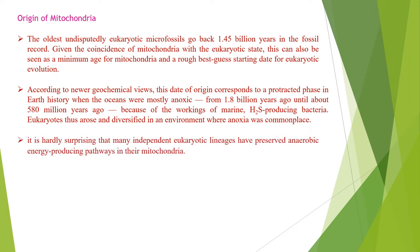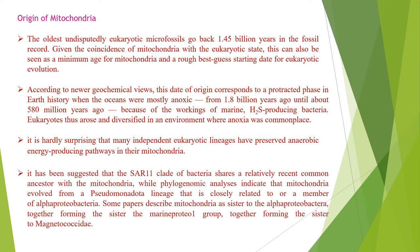It is surprising that many independent eukaryotic lineages have preserved anaerobic energy-producing pathways in their mitochondria. It has been suggested that SAR-11 bacteria share a relatively recent common ancestor with the mitochondria, while phylogenomic analyses indicate that mitochondria evolved from a Pseudomonadota lineage closely related to or a member of alpha proteobacteria. Some papers describe mitochondria as a sister to the alpha proteobacteria, together forming the sister to the marine proteo-1 group, and together forming the sister to Magnetococcida.